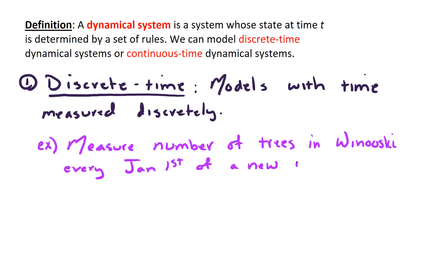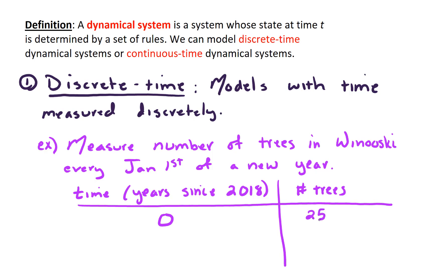So my model is going to look something like time, measured in years, maybe years since the start of my study. Let's say I start my study January 2018. I go out at time equals 0, which is January 1st 2018, and find there's 25 trees in Winooski. Then maybe one year later I find there's 29 trees and so forth.